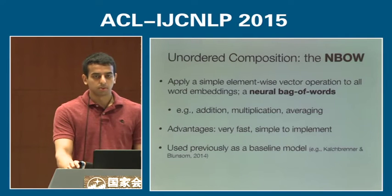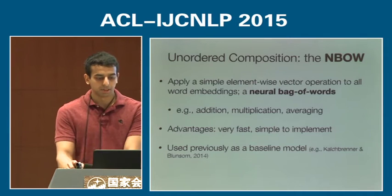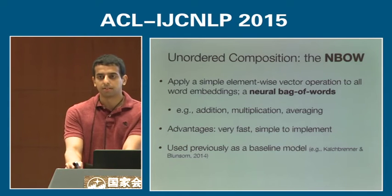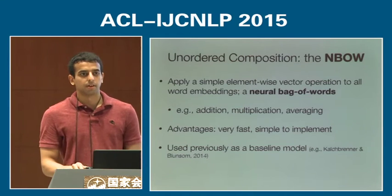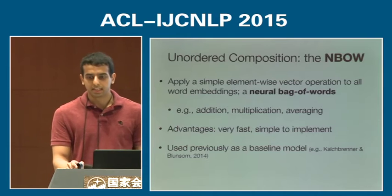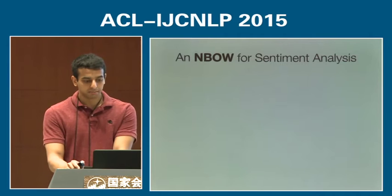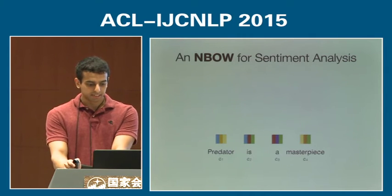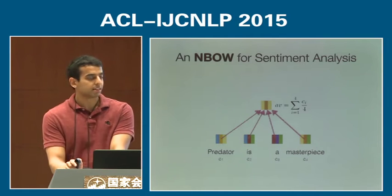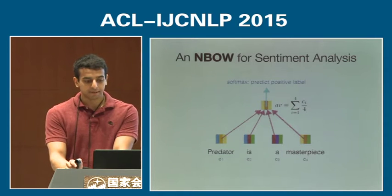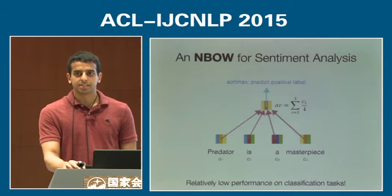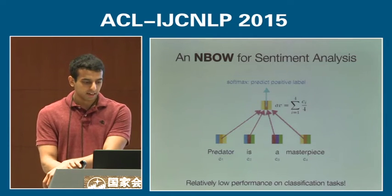Starting with unordered composition: the simplest neural unordered composition function is the ENBO, or neural bag of words model, which applies a simple element-wise vector operation — such as sum, multiplication, or average — to all input word embeddings. It's very fast and simple to understand and implement. For example, for the sentence 'Predator is a masterpiece,' we average together the four embeddings and pass it through a softmax layer to predict a positive label. However, this model has a drawback: it performs poorly on downstream classification tasks.